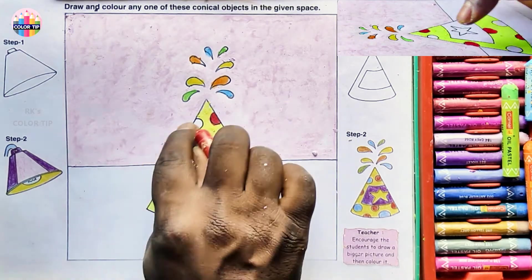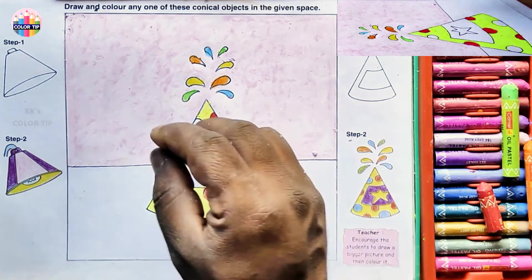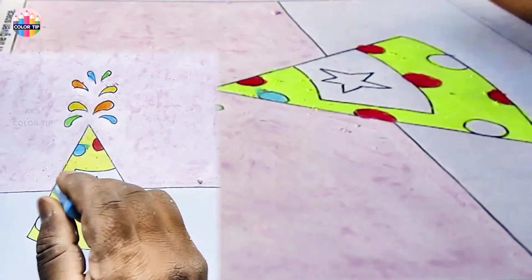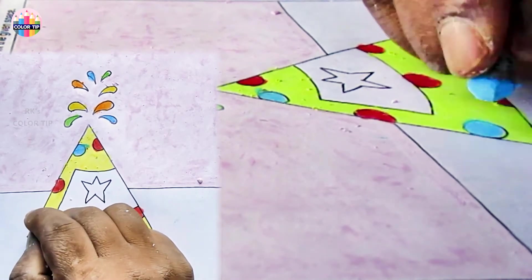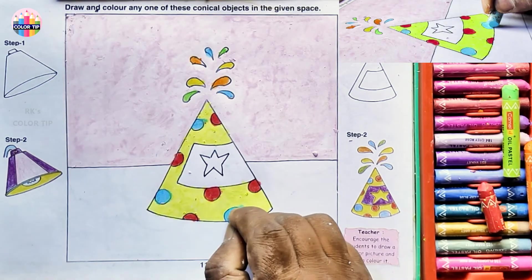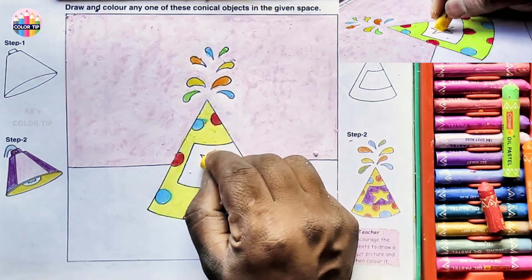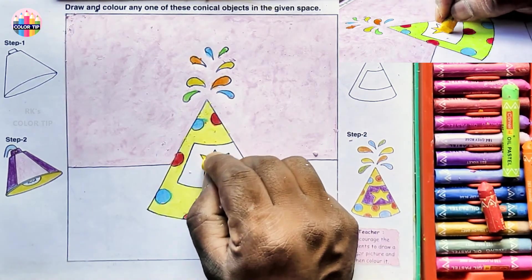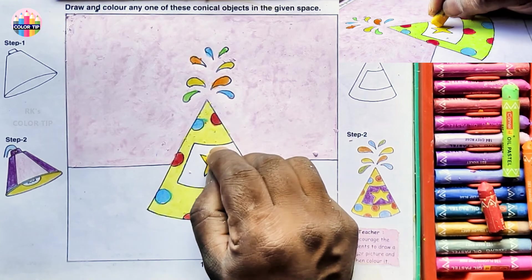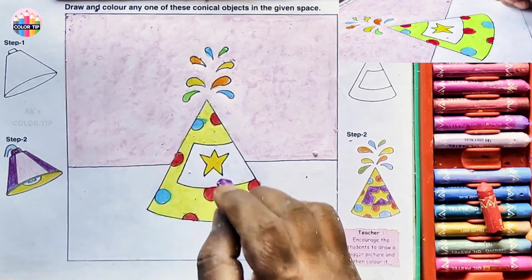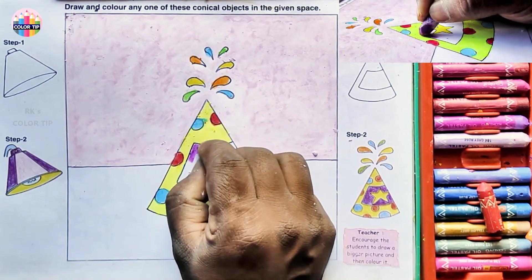Let's take light blue to fill these three semicircles. Let's take a yellow color to fill the star. Violet for this part.